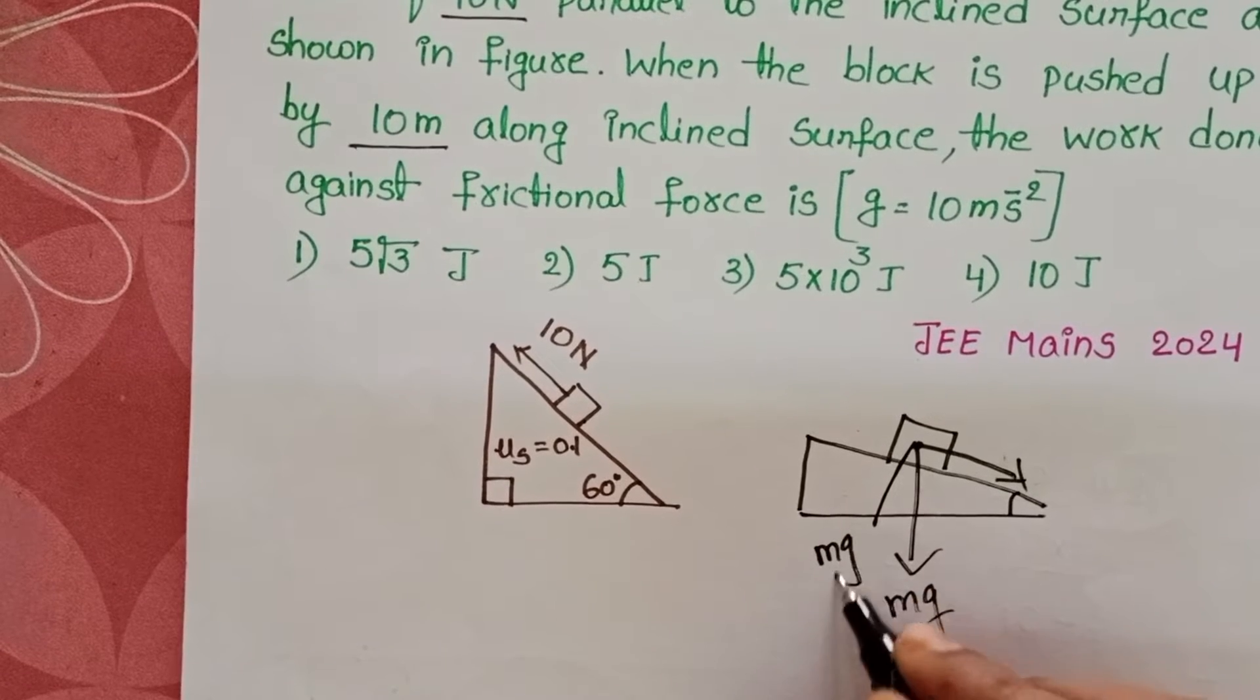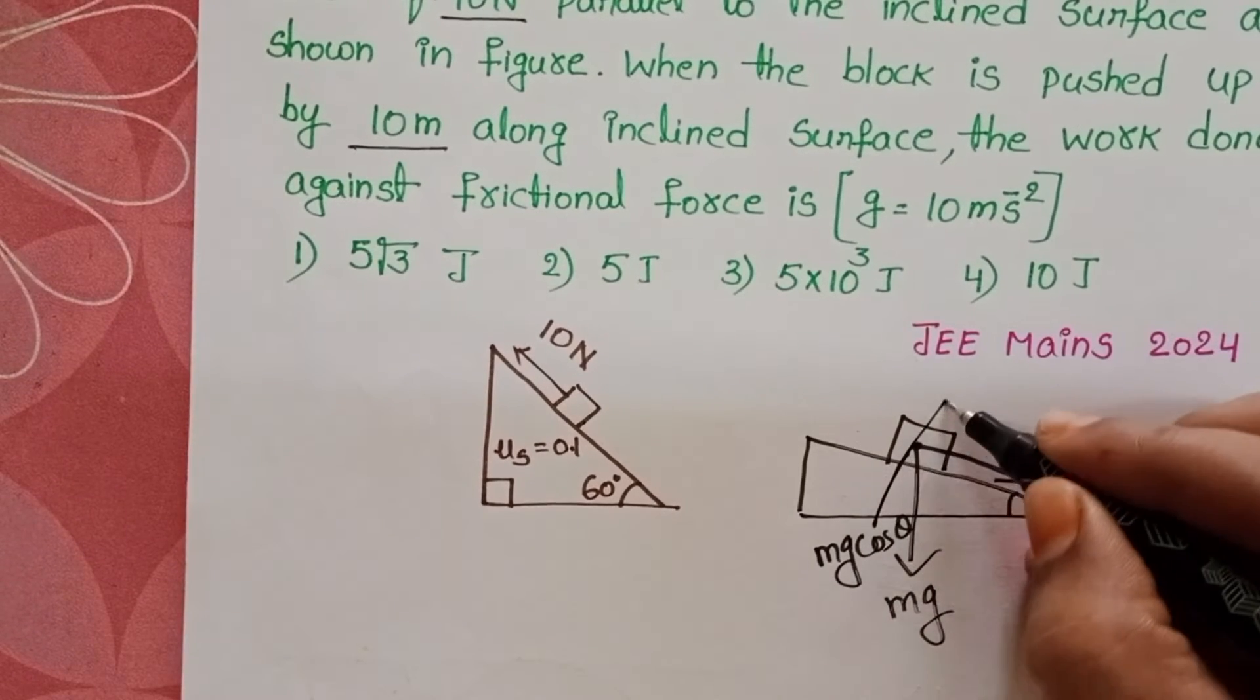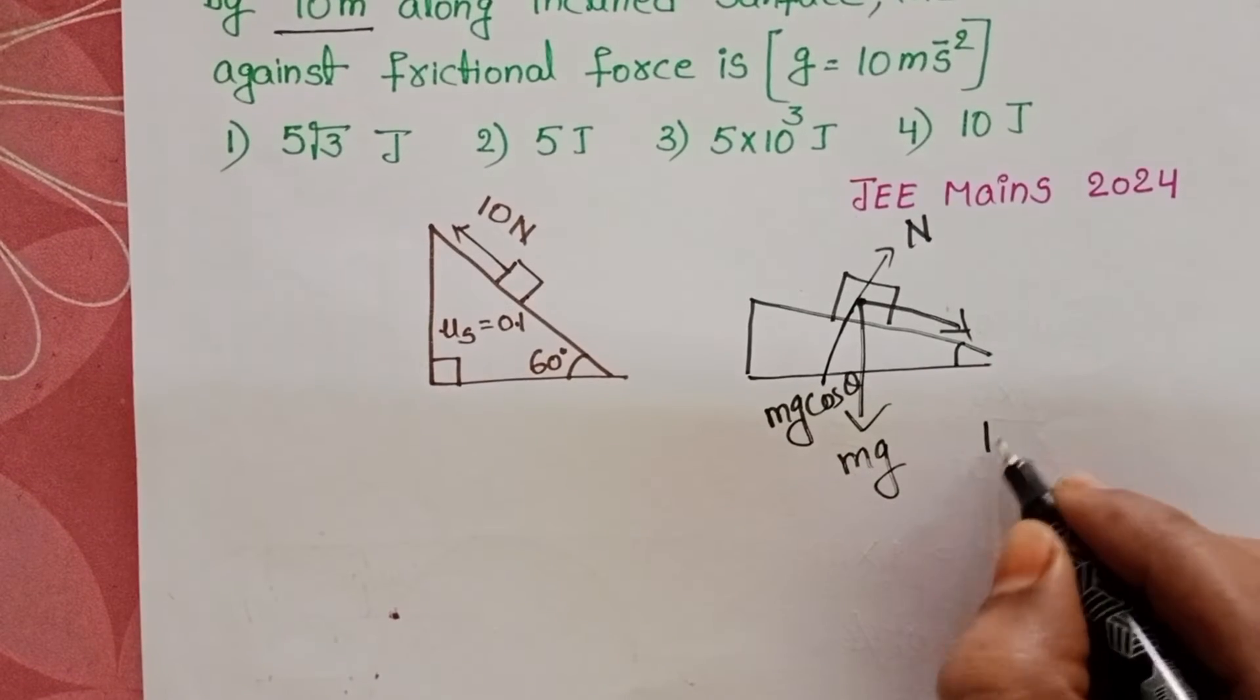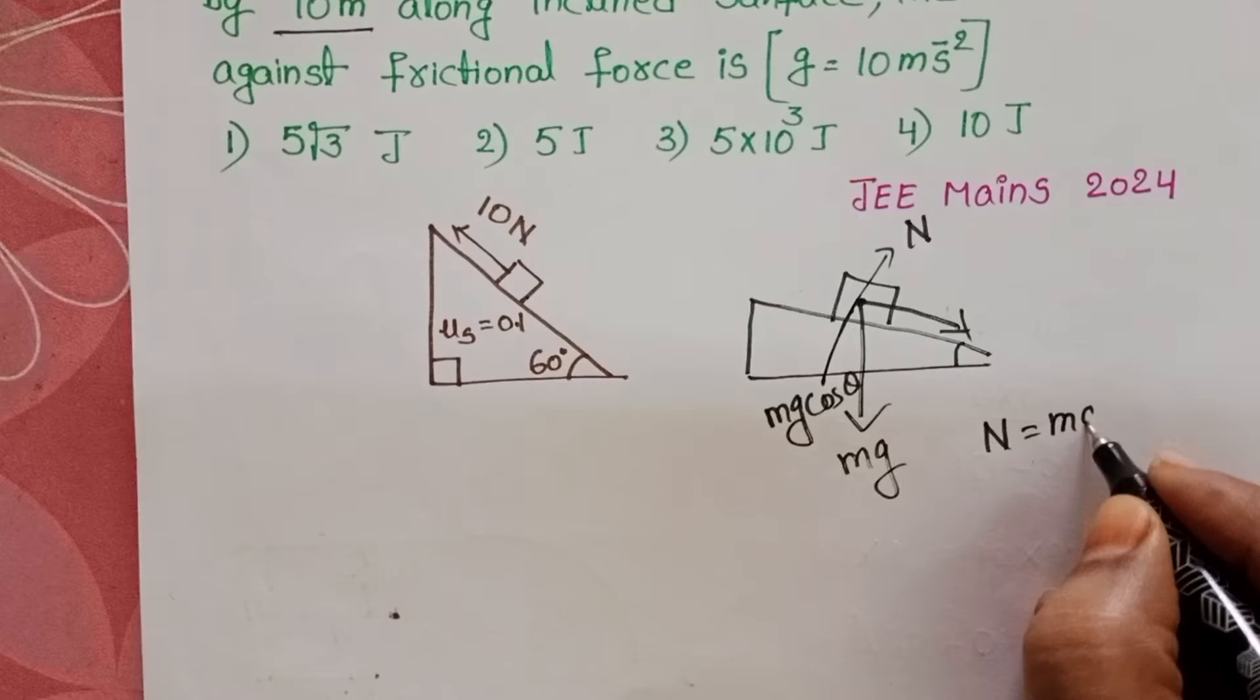This component is mg cos θ. Normal reaction N. So here normal reaction is equal to mg cos θ.